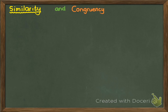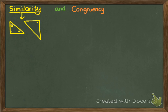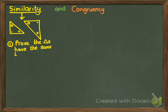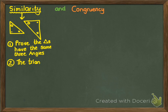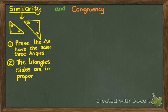There are two ways to prove similarity, one of them being the most common. The most common way to prove similarity is to prove that the triangles have the same set of three angles. The second way to prove similarity is that the triangles have sides that are in proportion. We'll talk about what that means shortly, but the most common way is definitely through angle, angle, angle.